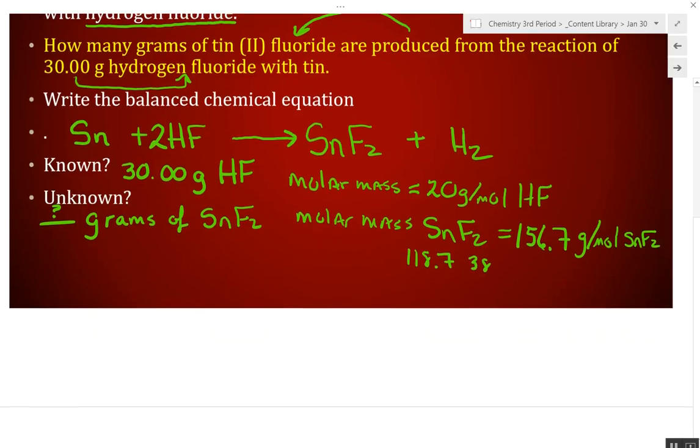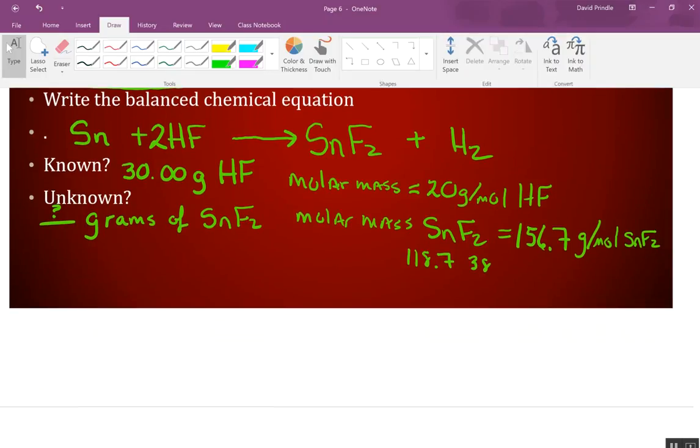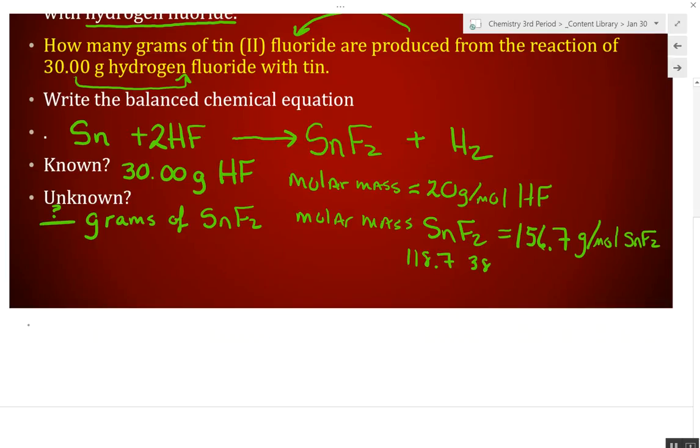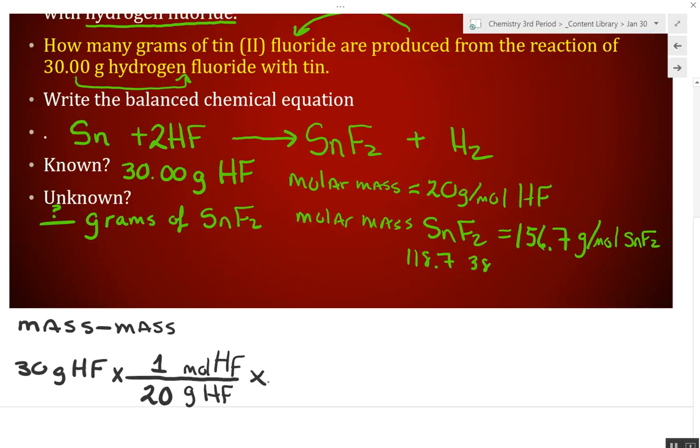Now, we are going to solve this. This is a mass to mass. We're going to start with our 30 grams of HF. I'm getting rid of the two decimal places just to save space. Now, we want to get rid of the grams of HF and get to moles of HF because we got to get to our mole ratio, which is a swinging door. What did I say one mole of HF weighs? 20. Somebody's paying attention.